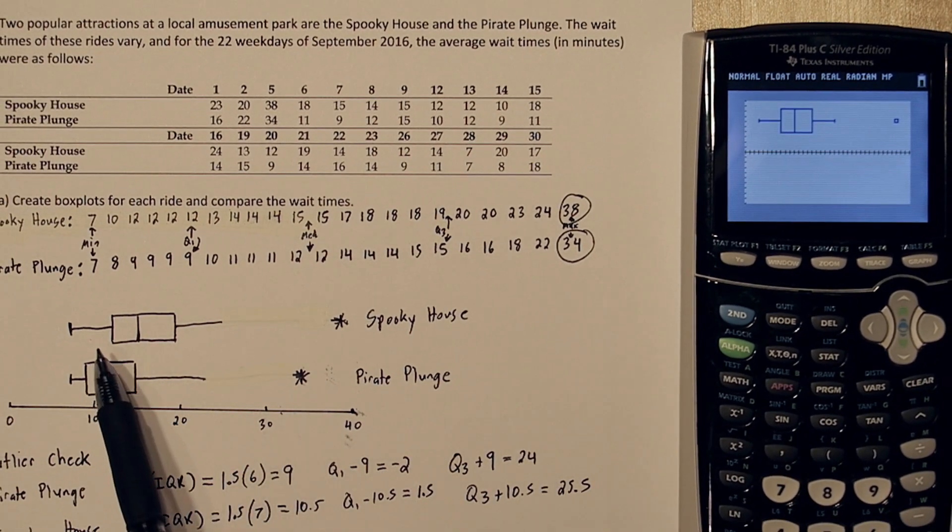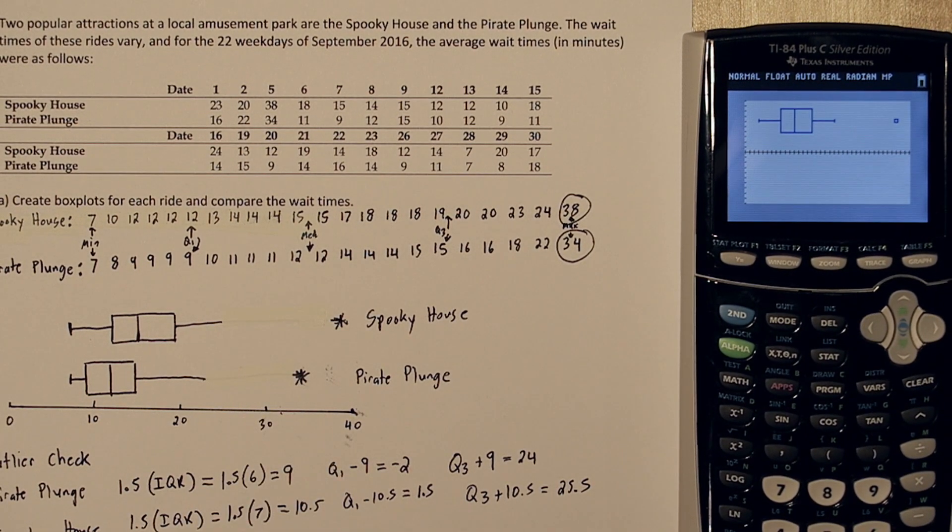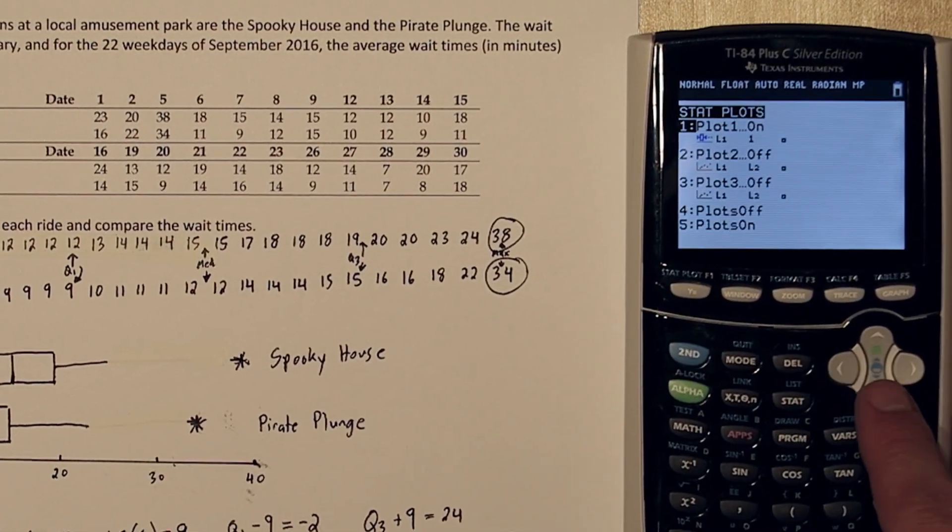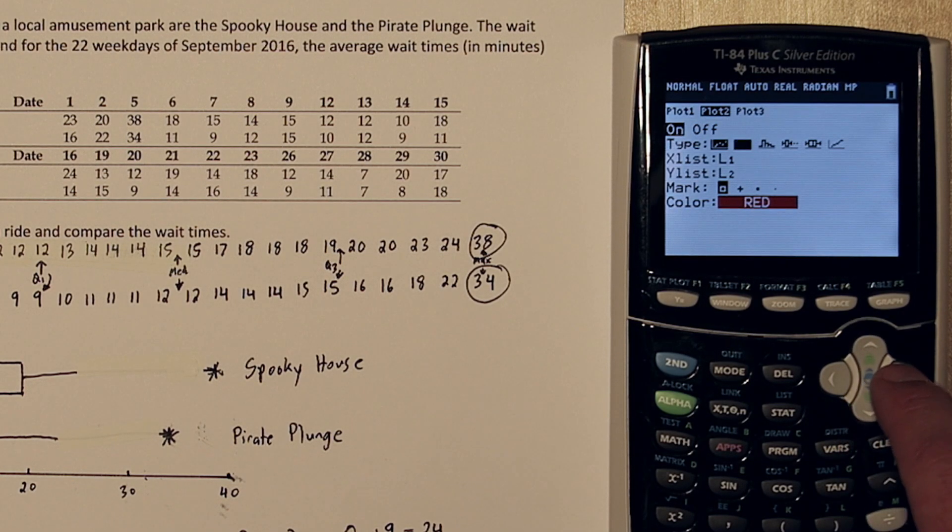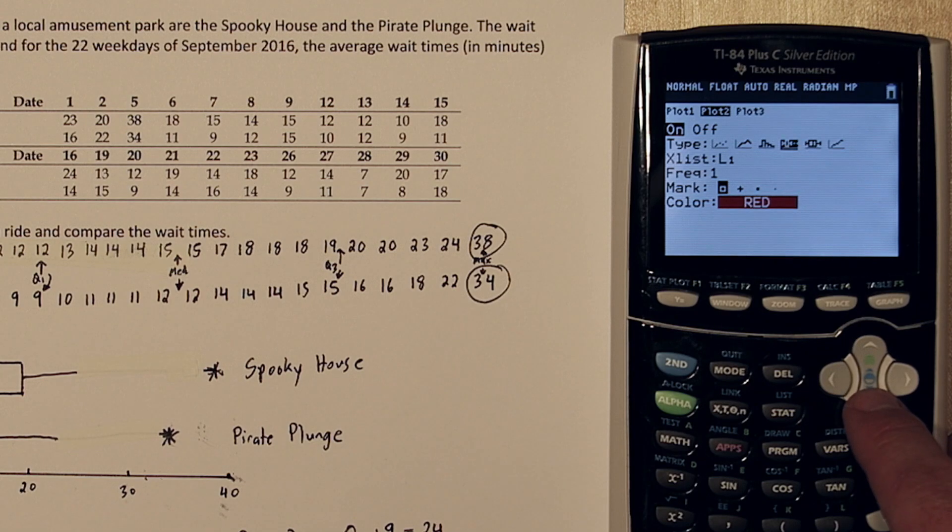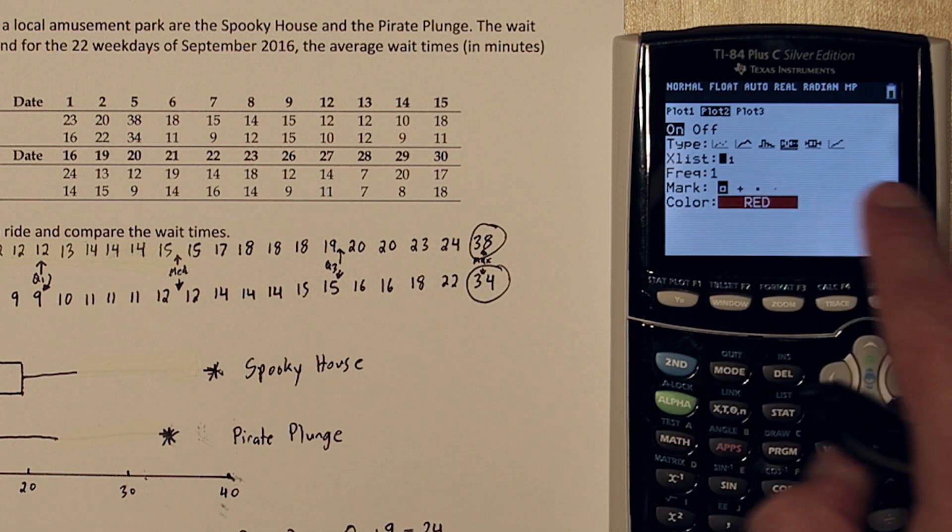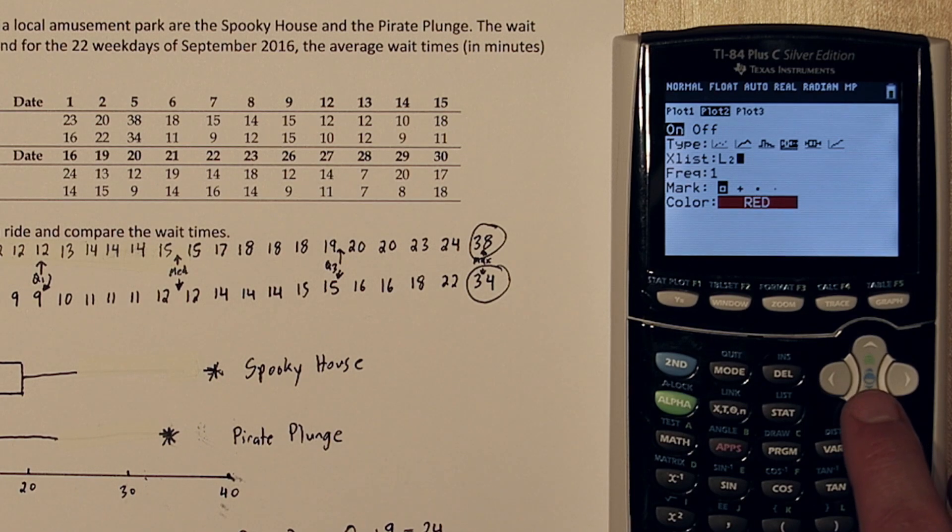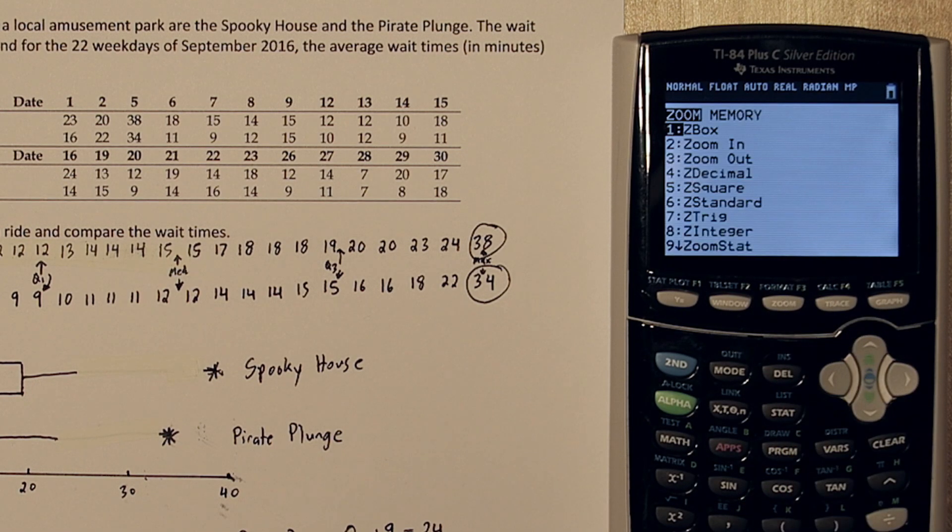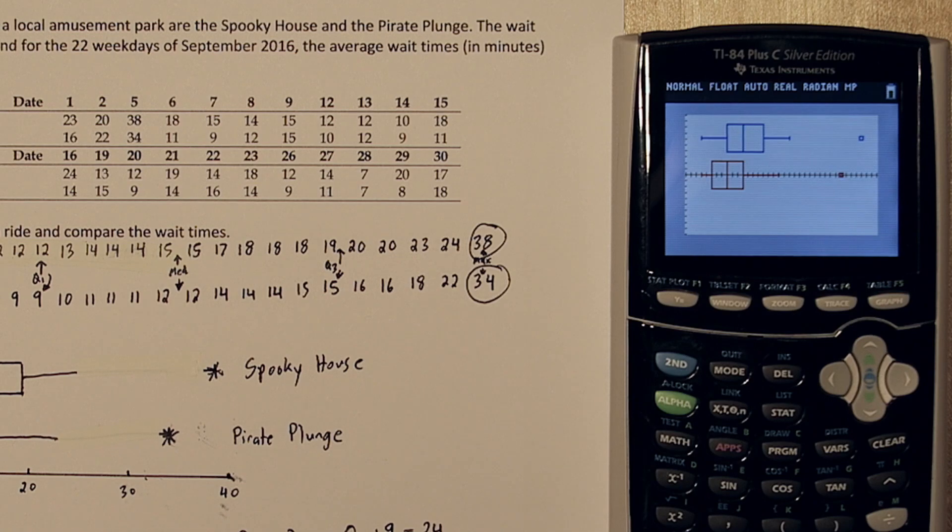And that actually matches the Spooky House box plot right here. Now let's get the Pirate Plunge box plot on there. If you press 2nd and Y equals again, go down to Plot 2. You're going to turn Plot 2 on, choose Modified Box Plot, and you need to change this to List 2. So press 2nd and the number 2. Now when we press Zoom 9 again, there's our other box plot for Pirate Plunge.